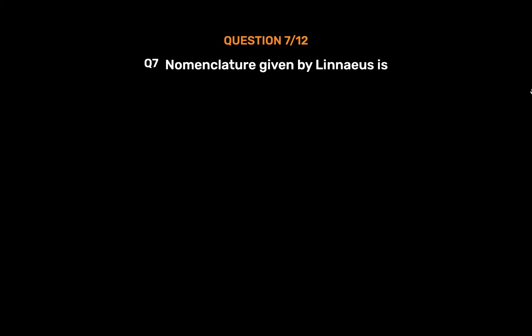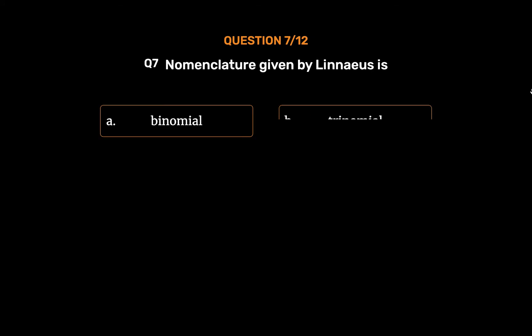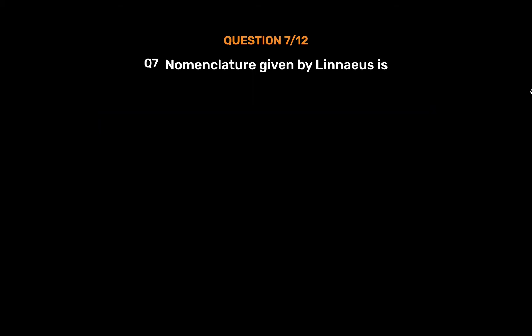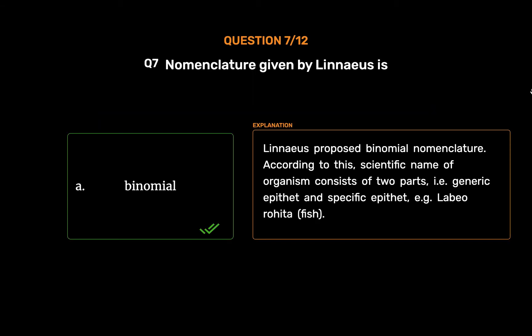Question No. 7. Nomenclature given by Linnaeus is. Option A: Binomial. Option B: Trinomial. Option C: Phylogenic. Option D: Natural. The correct answer is Option A: Binomial. Linnaeus proposed binomial nomenclature. According to this, the scientific name of an organism consists of two parts, i.e. generic epithet and specific epithet, for example Labeo rohita, fish.